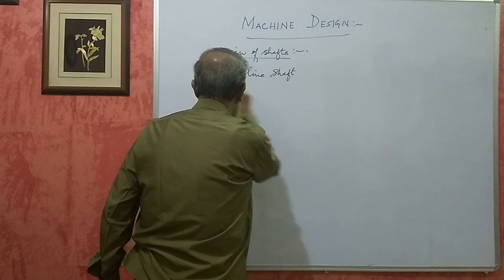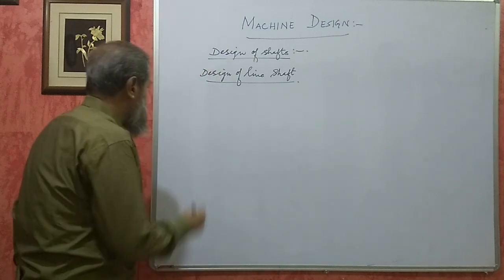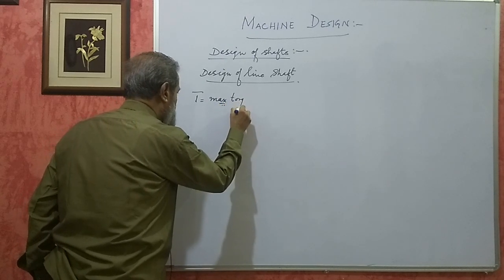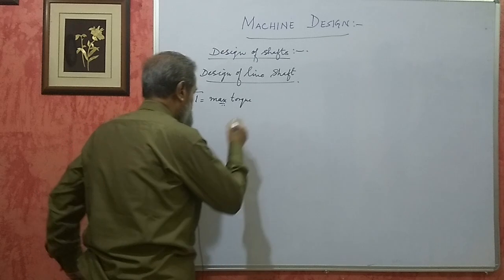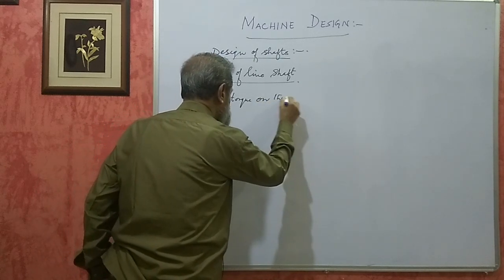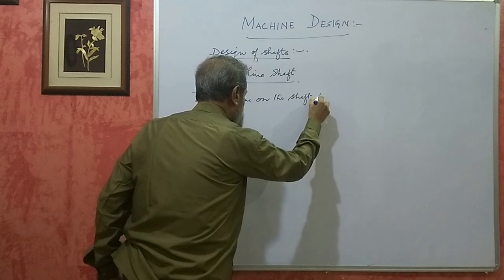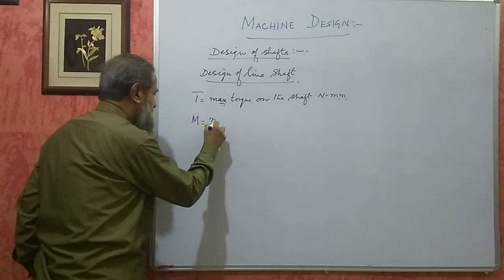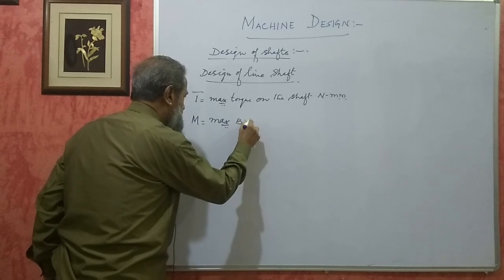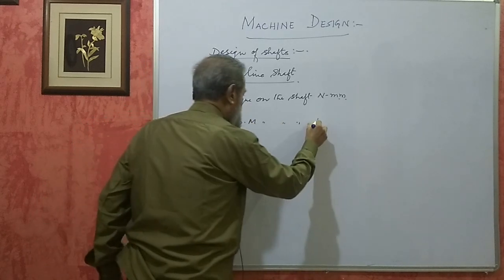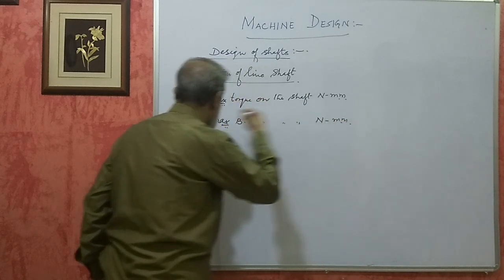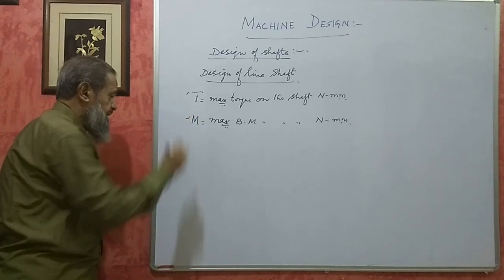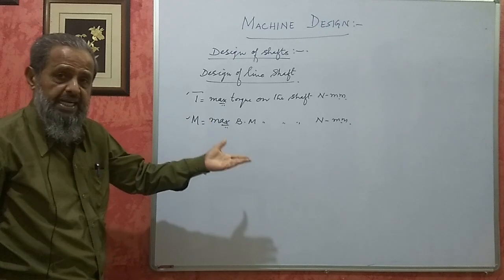Both twisting and bending. T is the maximum torque or maximum twisting moment on the shaft in newton millimetre. M is the maximum bending moment on the shaft in newton mm. These two can be directly given or they may be indirectly given.